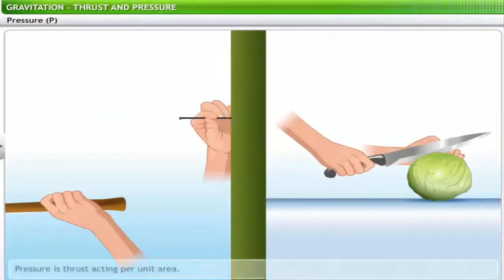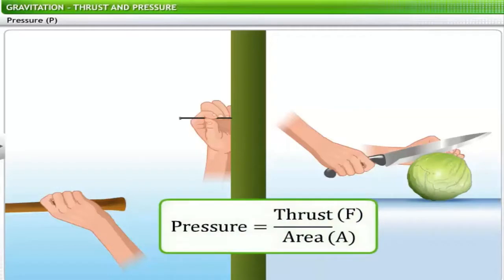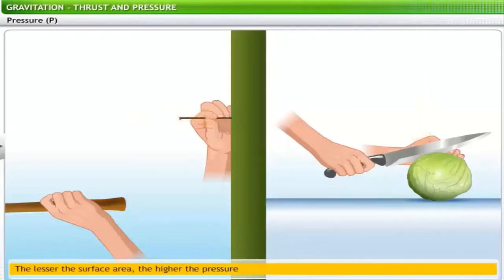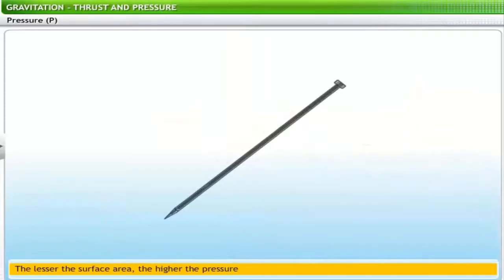In other words, pressure is the amount of thrust acting on a unit area. Pressure is denoted by the letter P. Hence, pressure is calculated by dividing thrust with area. The lesser the surface area of an object, the more the pressure applied by that object. The pointed tip of the nail minimizes the surface area of the nail on which thrust is applied.